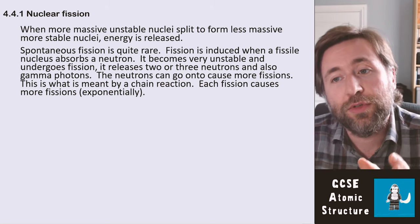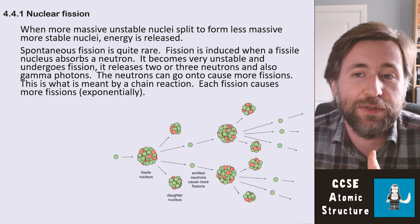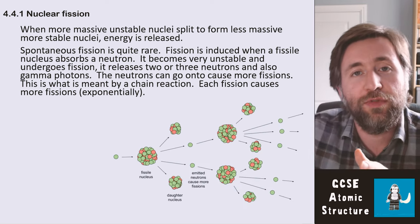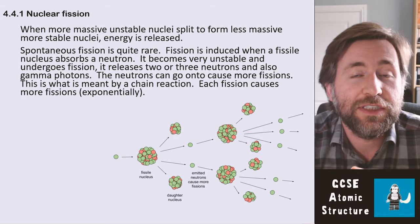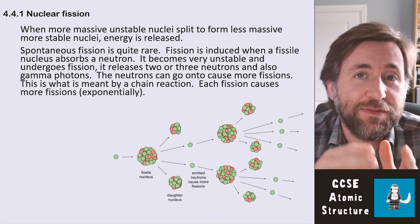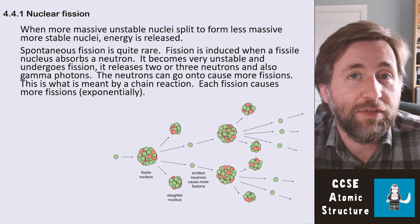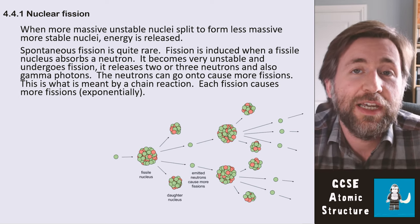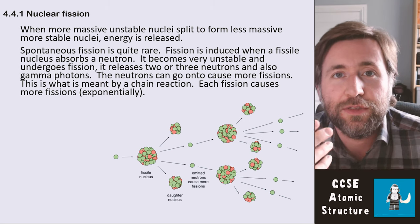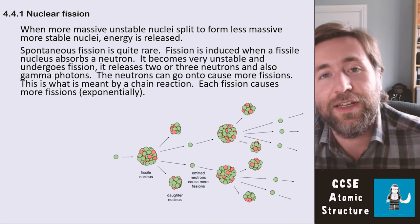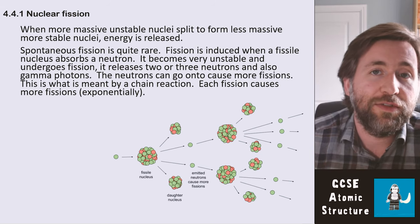The neutrons go on to cause more fissions, and this is what we mean by a chain reaction. Each fission causes more fissions and that happens exponentially. Because it releases two or three neutrons, each fission goes on to start two or three others — very quickly you get one causing two, causing four, causing eight, causing sixteen, and so on.